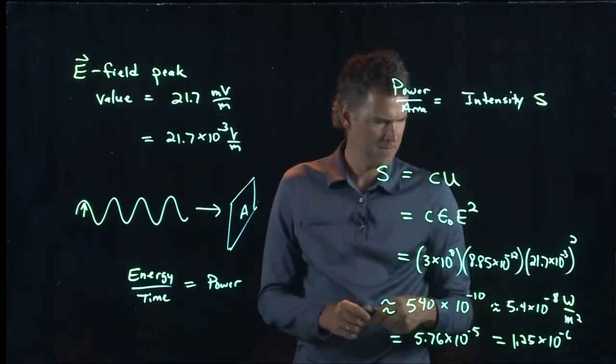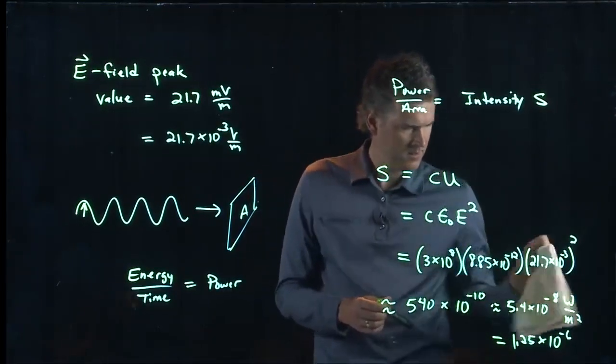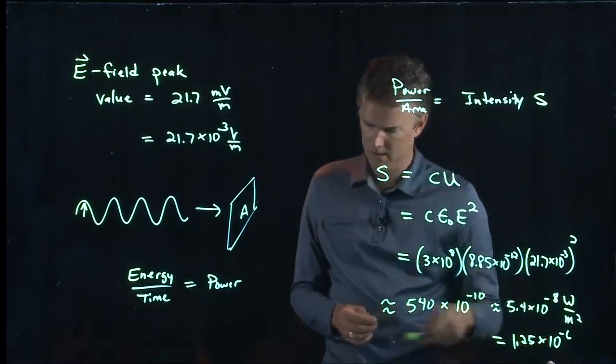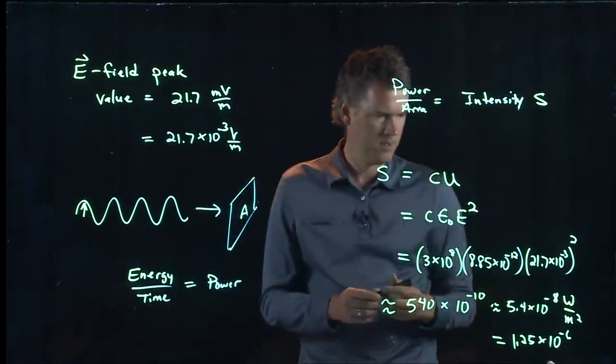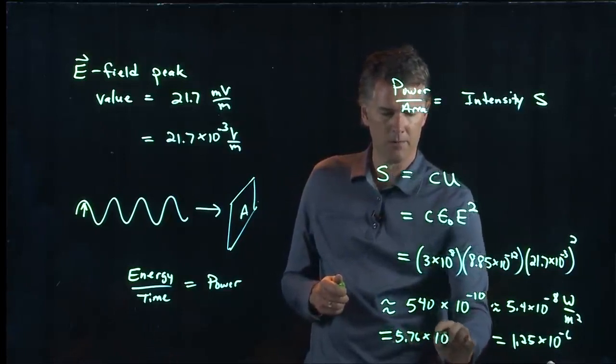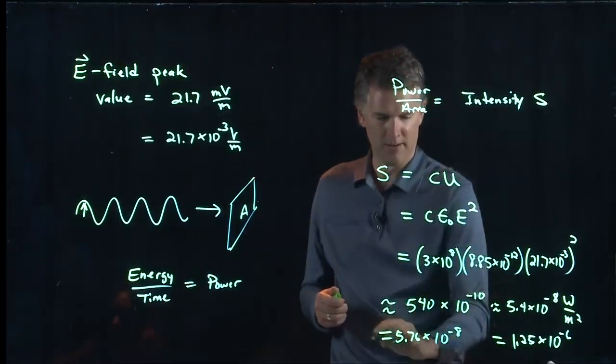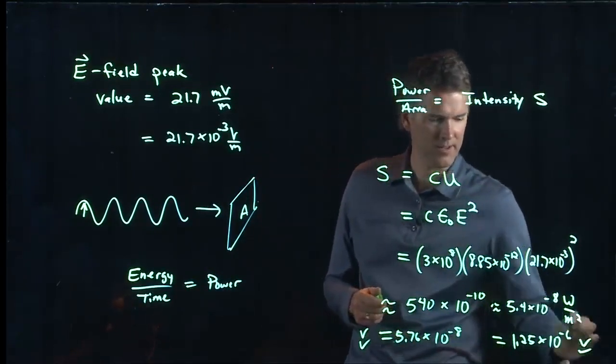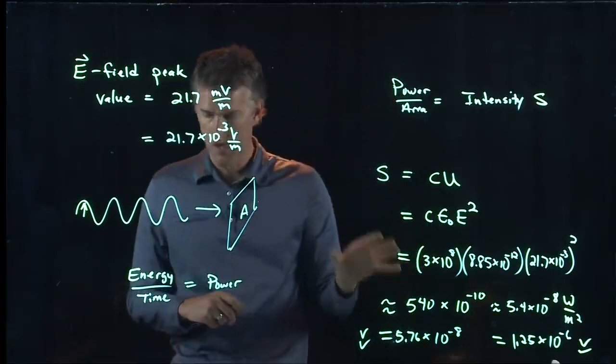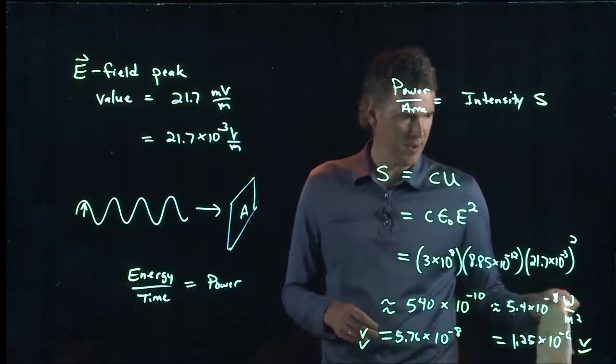This one's right? Okay, so we'll erase that one. Is that one confirmed by anybody? 5.76 times 10 to the negative 8. All right, we got two votes here, check check. We got two votes here. Why don't we do this: we'll take a five minute break, we'll work this out, and then we'll come back here and tell you what the answer is.